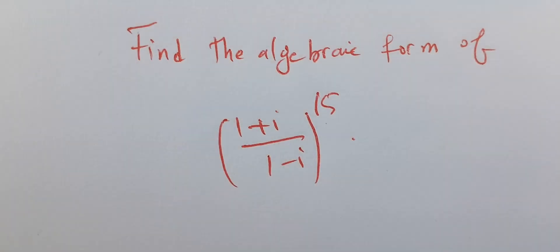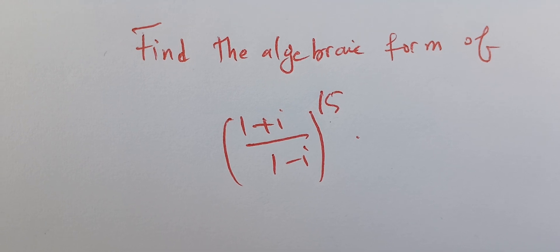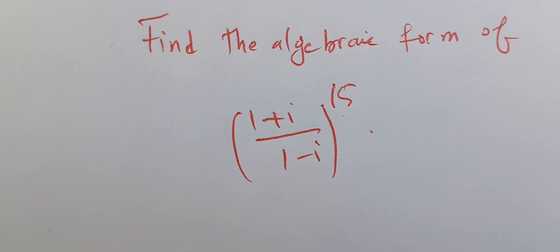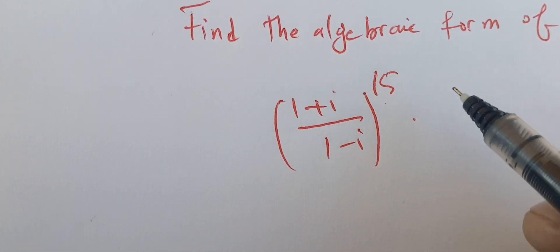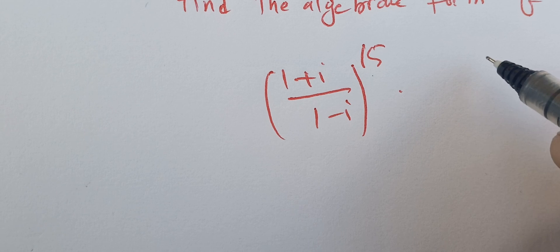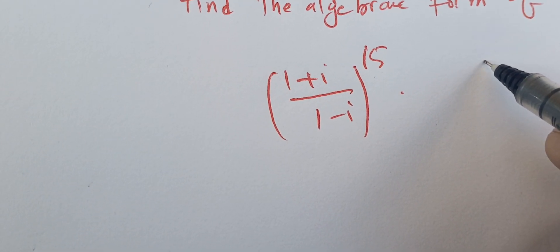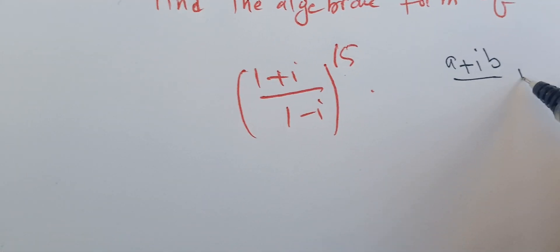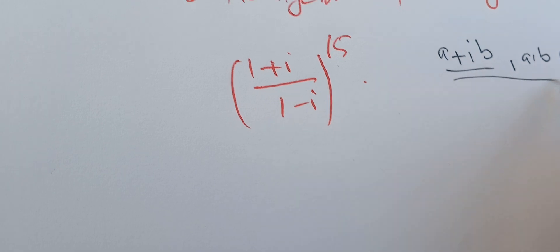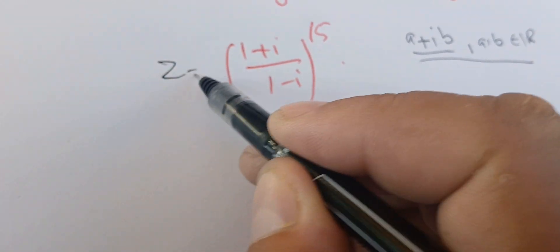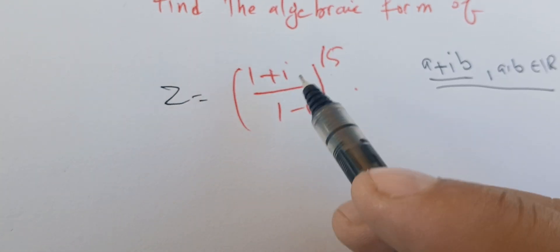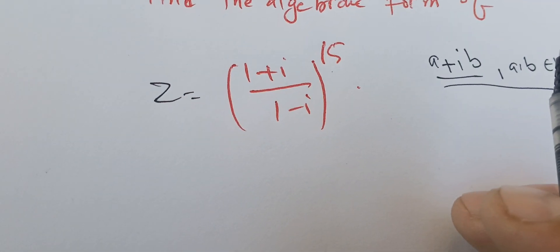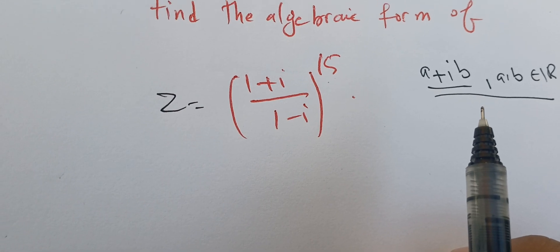Welcome back. In this video we're going to find the algebraic form of (1+i)/(1-i) to the power 15. Remember that this is a complex number, so finding the algebraic form means writing it in some form as a+ib with a and b real numbers. We're going to call this number z, and we'll first work on the inside part and then take the power 15 — that's the easiest way to deal with this question.